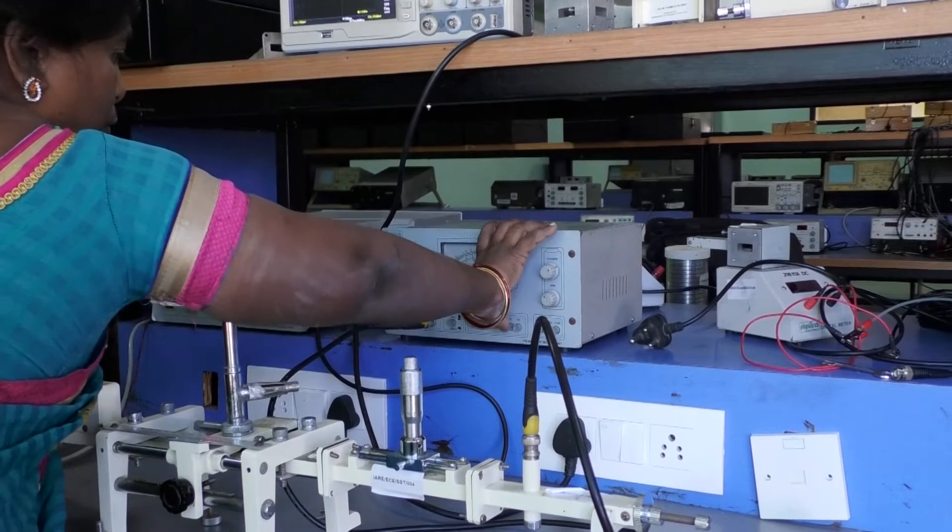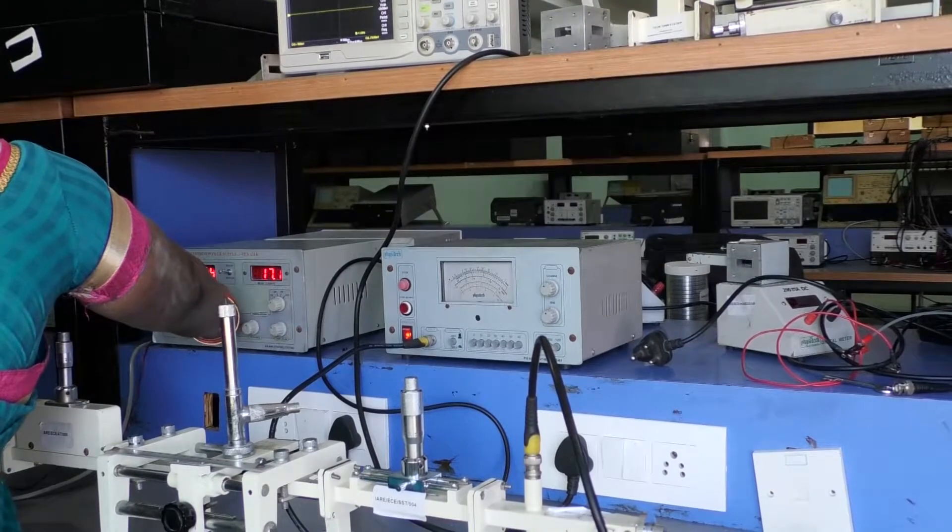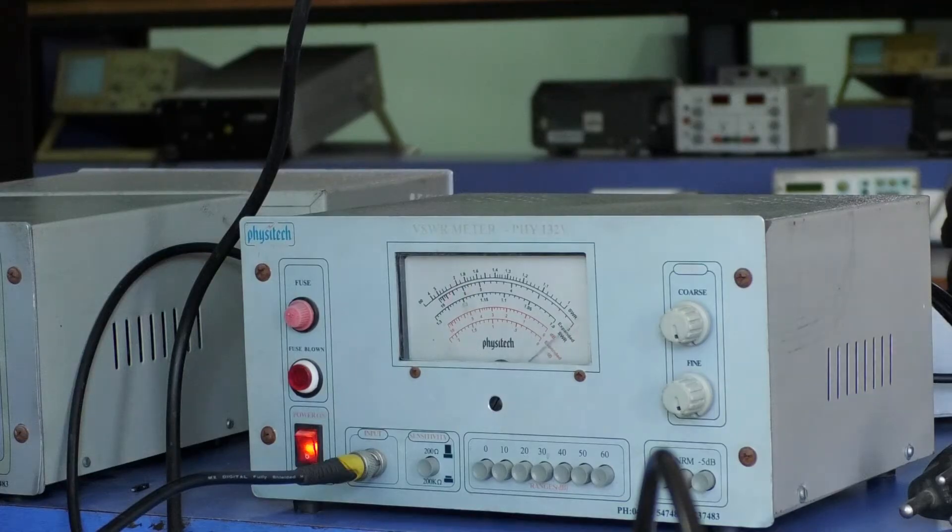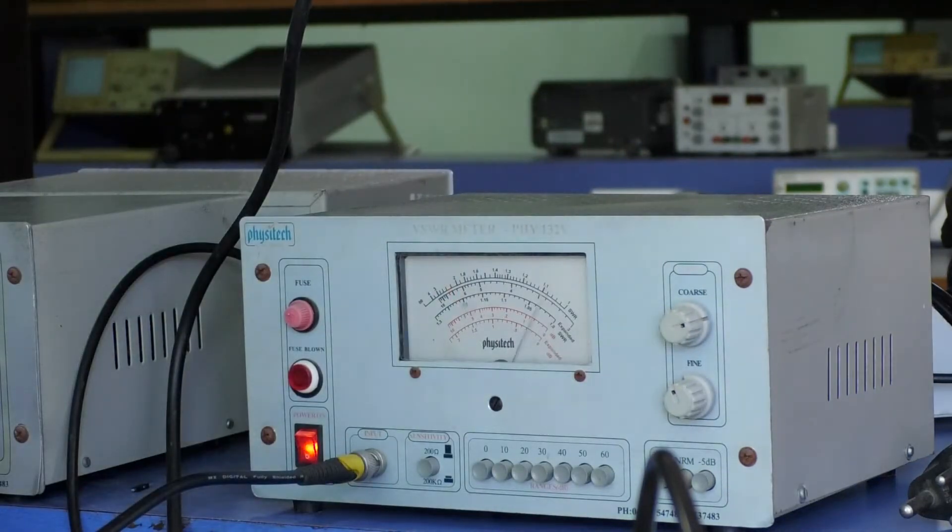We can vary the coarse structure or gain structure or repeller voltage. Now the VSWR is set to 1. Or we can also vary the variable attenuator position to set the VSWR reading as 1 on VSWR meter.